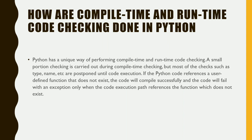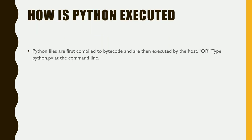Next question: how are compile time and runtime code checking done in Python? Python has a unique way of performing these checks. A small portion of checking is carried out during compile time, but most checks — such as type and name checks — are postponed until code execution. For example, if Python code references a user-defined function that does not exist, the code will compile successfully but will fail with an exception only when the execution path references that non-existent function. Unlike Java, checking in Python happens at execution time — this is one of the major differences between Java and Python.